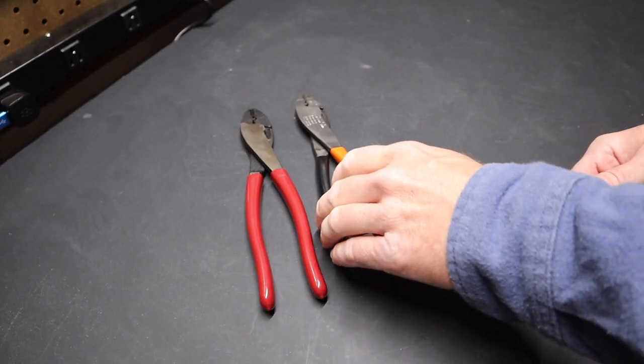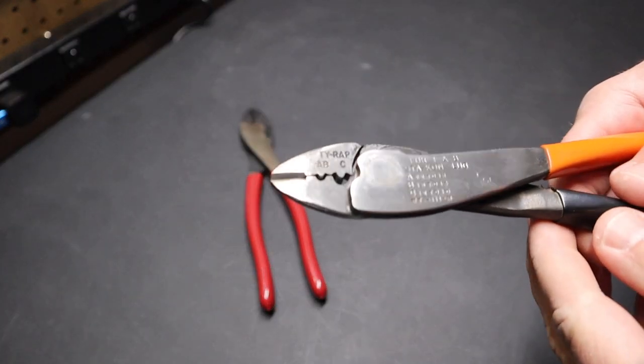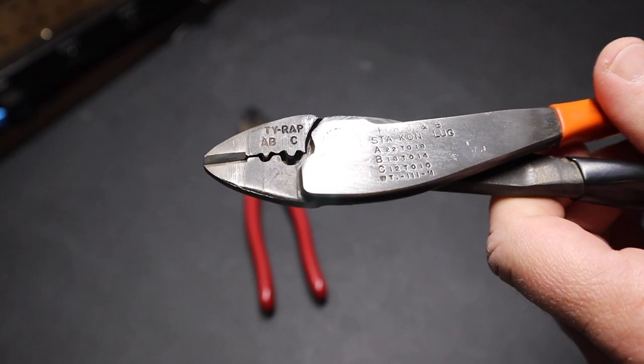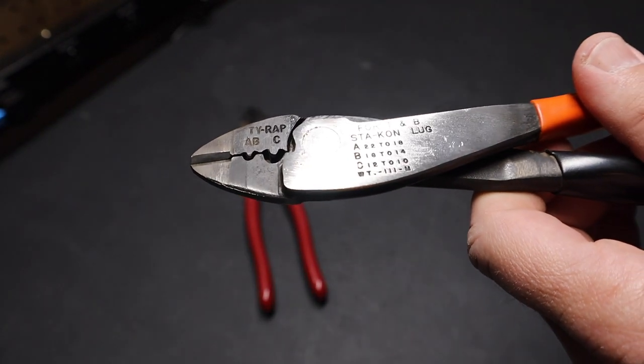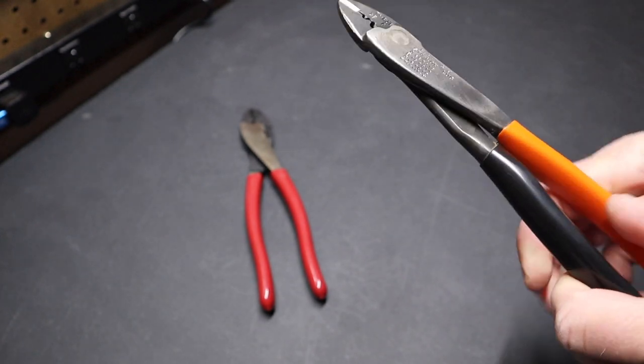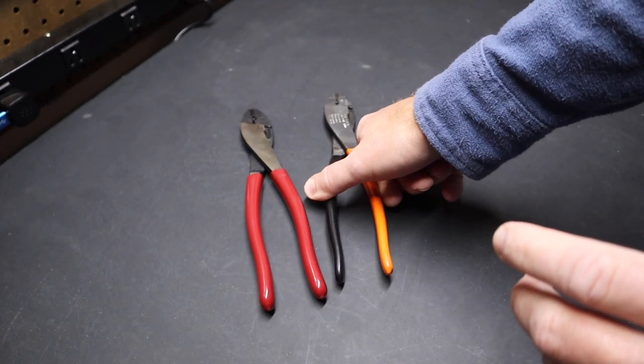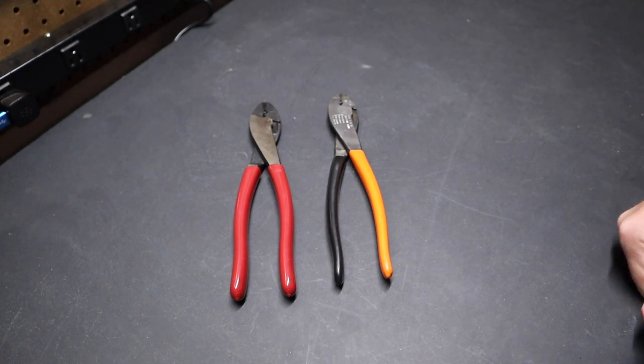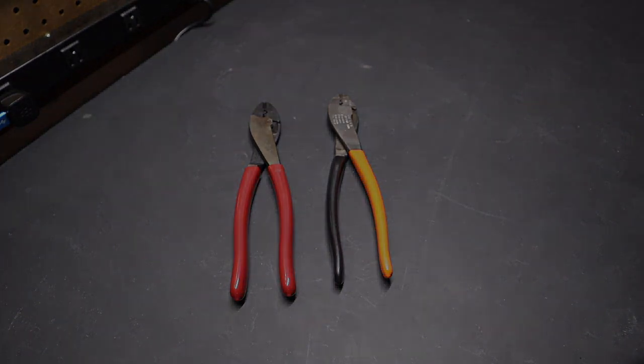There you have it folks. What I think is the best crimper on the market for most people, the Thomas and Betts model number WT111-M, excellent tool if you can get your hands on one. And if you have another favorite, or if you have experience with Thomas and Betts, please leave a comment. And if you liked or learned something here today, please like and subscribe. And with that said, I'll see you in the next video.